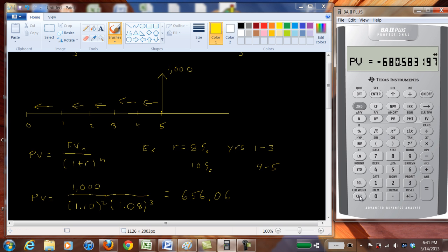So the correct way to do this is to use both interest rates for the appropriate number of periods. So we had eight percent for three periods and we had ten percent for two periods.